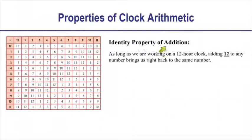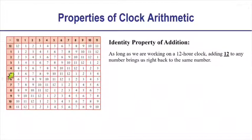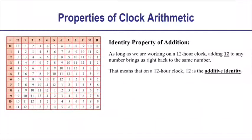We also have the identity property of addition. As long as we're working on a 12-hour clock, adding 12 to any number brings us right back to the same number. If you start at 3 and add 12, you get 3. If you start at 7 and add 12, you get 7. Adding 12 is the same as adding 0, which means that on a 12-hour clock, 12 is the additive identity — the number you can add to anything without changing the value.